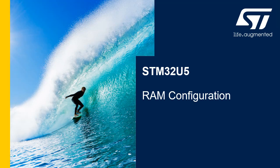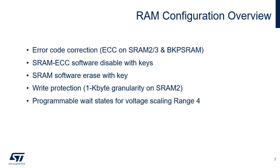Hello and welcome to this presentation of the STM32U5 RAM Configuration Controller. The RAM Configuration Controller is in charge of handling the Error Code Correction, or ECC, supported by SRAM2, SRAM3, and Backup SRAM. It also handles disabling ECC through a software sequence based on a key register, performing global SRAM erasure through a software sequence also based on a key register, protecting SRAM2 against write accesses for each 1 KB chunk, and programming the number of wait states according to the actual frequency when the microcontroller is in voltage range 4.